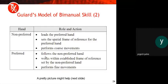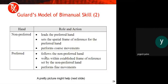For the non-preferred hand, the role and actions are: first, it leads the preferred hand; second, it sets the spatial frame of reference for the preferred hand; and third, it performs coarse movement. For the preferred hand, the role and actions are: first, it follows the non-preferred hand; second, it works within the established frame of reference set by the non-preferred hand; and third, it performs fine movement.